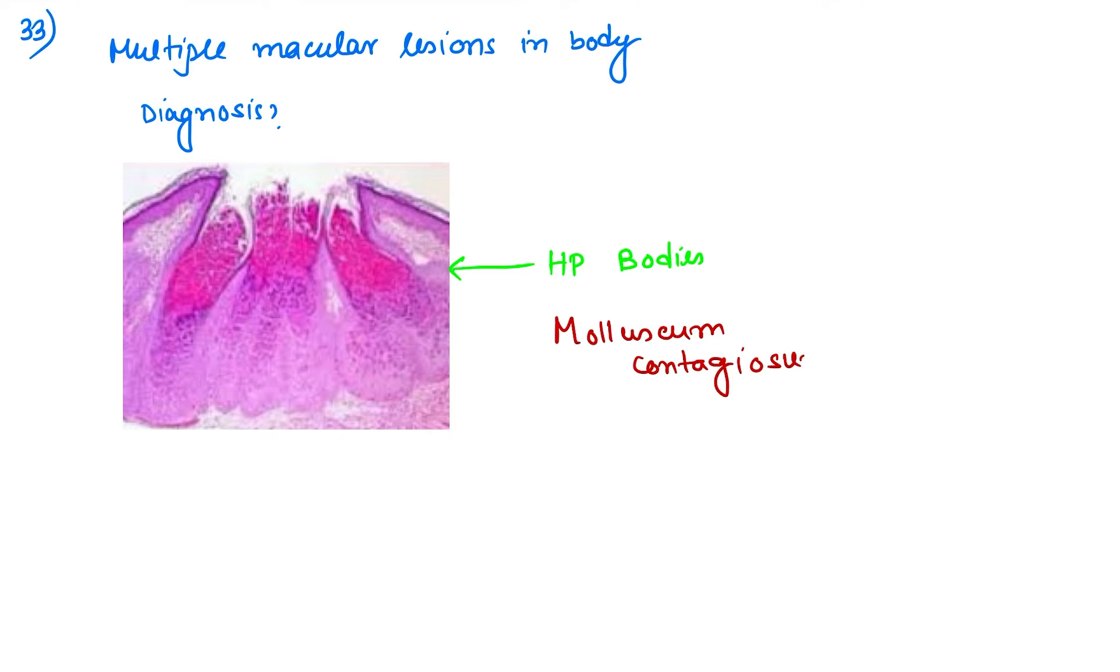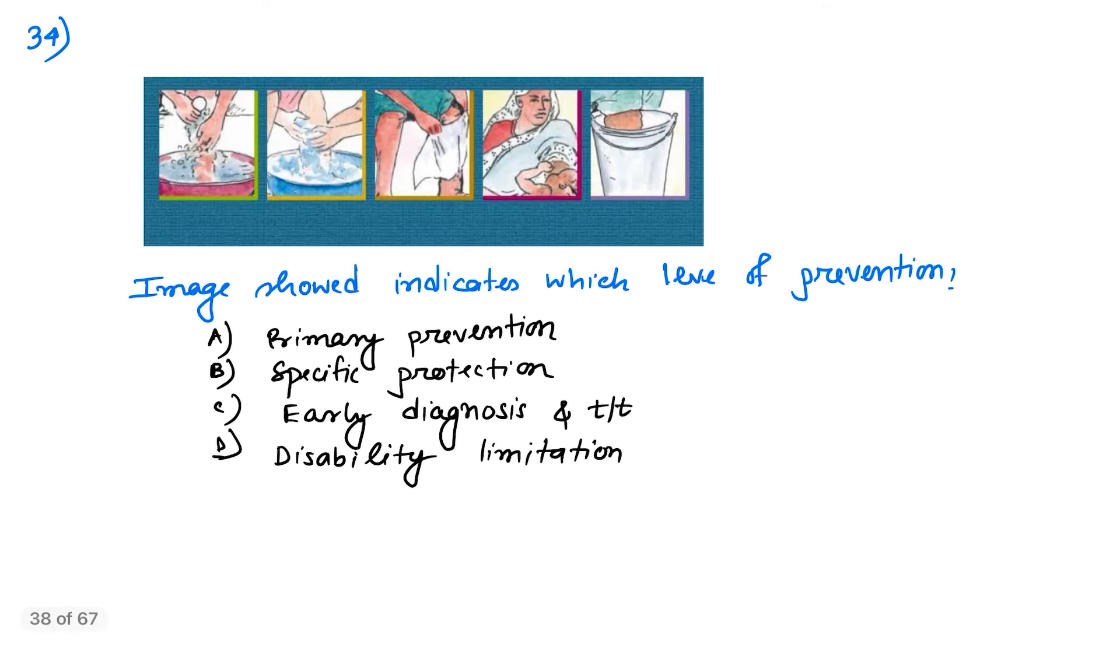Coming to question number 34: the image indicates which level of prevention? This is disability limitation for the disease filariasis. As you can see, the elephant-like lower limb - this is an elephantiasis or filariasis patient taking care of his lower limb to prevent disability. So this is disability limitation.